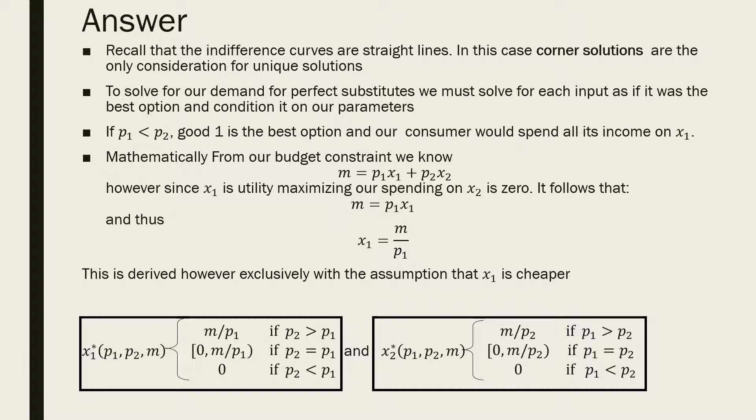So that's how you find the Marshallian demands for a case with perfect substitutes. I'll see you in the next video.